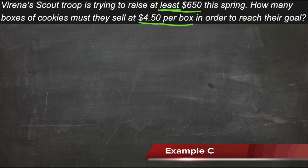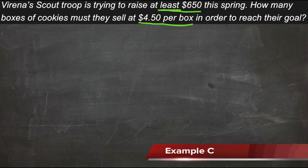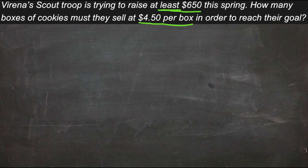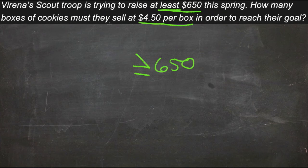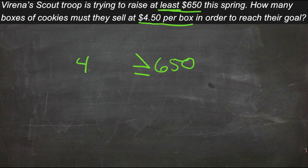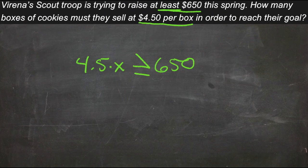So we know that Verena wants to get a minimum of 650. So whatever we do, it needs to be equal to or greater than 650. So let's start there. Whatever our total is, it's going to be equal to or greater than 650. And we need to know how many boxes of cookies they must sell at $4.50 a box. So we get $4.50 per box times some number of boxes. And that needs to be equal to or greater than 650.